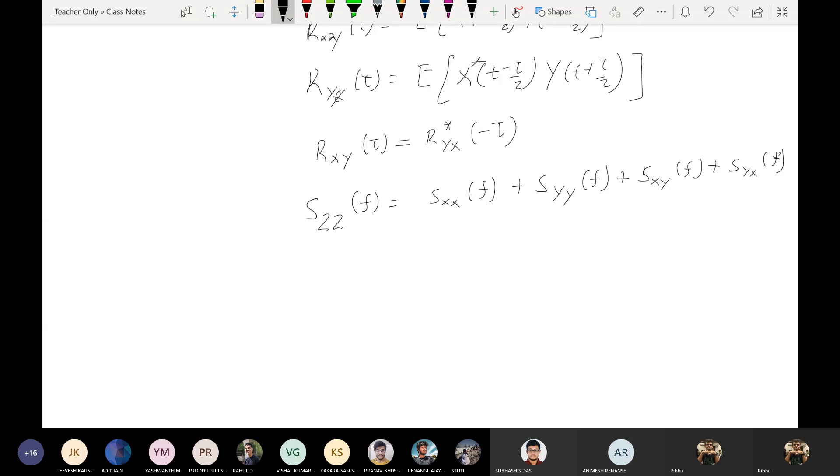If x(t) and y(t) are complex valued, r_xy(τ) equals the expected value of x(t + τ/2) times y(t - τ/2) complex conjugate. R_yx(τ) equals expected value of x(t - τ/2) complex conjugate times y(t + τ/2). Now due to this conjugate symmetry, if I take the Fourier transform on both sides, I get this. You can work this out yourself using basic properties of Fourier transform. So s_zz(f) equals this.